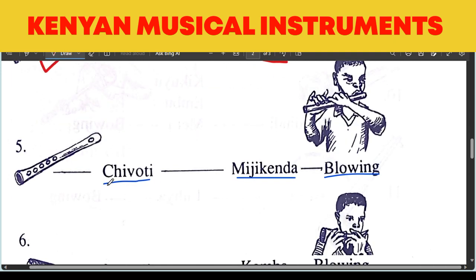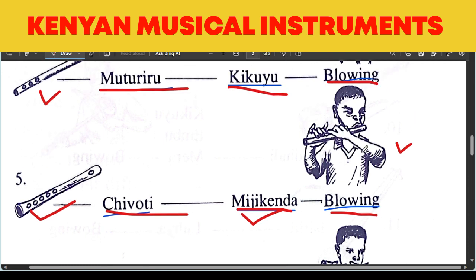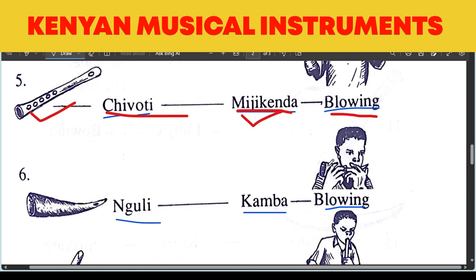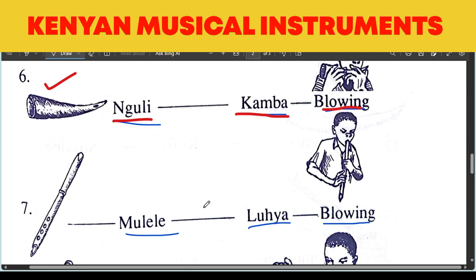We have Chivoti. This is the Chivoti — here is how it looks like. Then we have Chivoti from the Michikenda, played by blowing. That's the position, how you play it. Then we have Nguri. Nguri is from the Kamba people. It's also another horn, played by blowing.